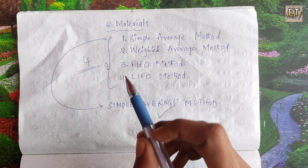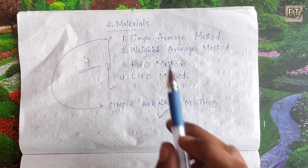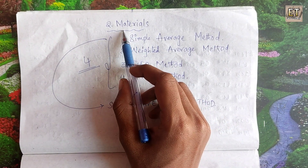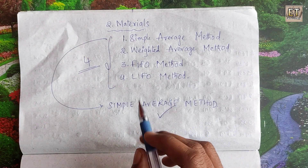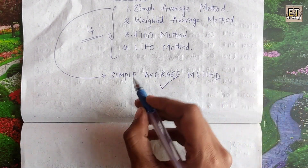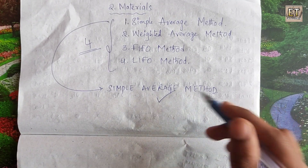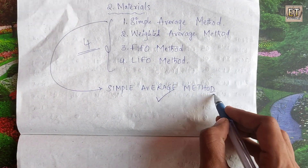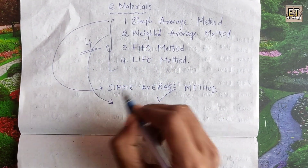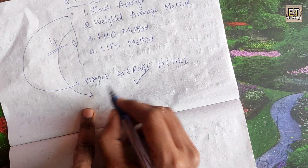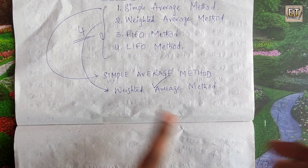Hello friends, in this video we will discuss the 5th semester degree, 2nd unit from Cost Accounting. We will discuss materials in the Cost Accounting subject. In this video, we will discuss the 2nd type of sum. The name is Weighted Average Method. We will practice the sums in this video.